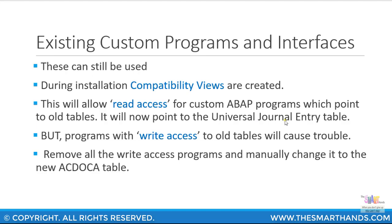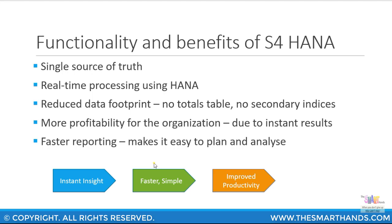Revisiting the functionality and benefits of S/4HANA: the single source of truth — the universal journal table — means by accessing one single table you can capture all the information. Previously you had to consolidate multiple tables and use primary keys and foreign keys to find common ground to link many tables. With real-time processing and reduced data footprint — because no totals tables or secondary index tables are required — you have significantly reduced your data footprint, allowing for faster reporting and easier planning and analysis.